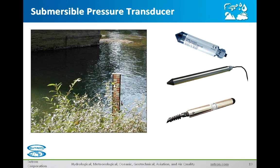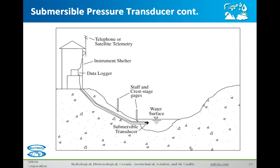Pressure transducers are another type of sensor used in measuring stage or water level. What pressure transducers do is they have a very sensitive sensor inside that measures the weight of the water above it and can convert that to a stage or water level. They're not often used in surface water, but they are in some cases. Here's a graphic example of a gauging station up on the bank, with the submersible actually out in the channel of water. The cable is obviously buried in conduit under the bank.